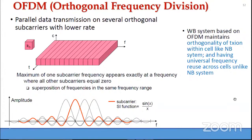Outside the cell also, for the OFDMA system we have universal frequency reuse — the entire bandwidth is being used in every cell, unlike the narrowband system.